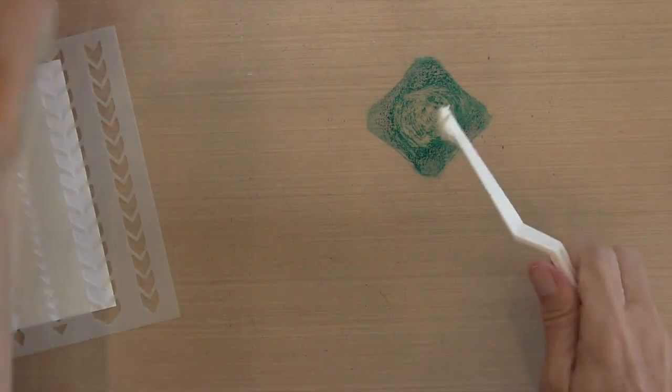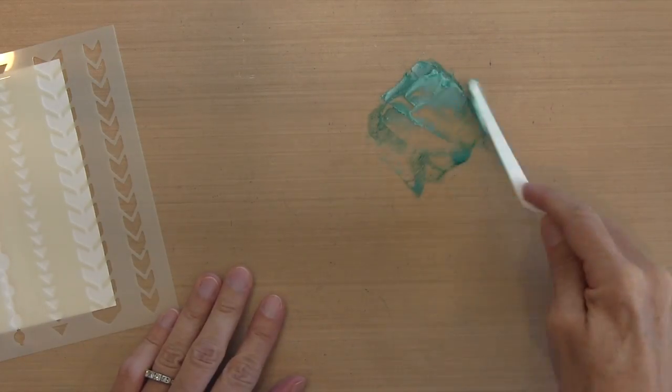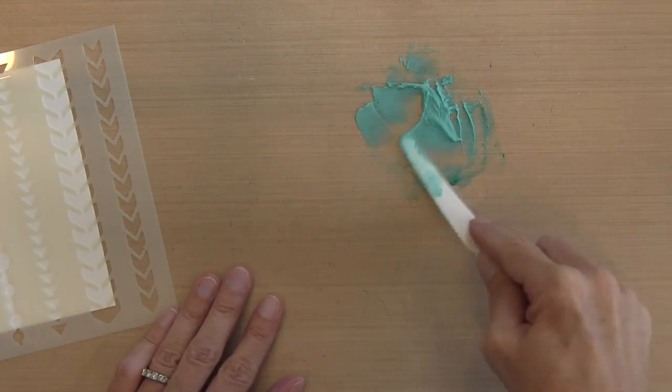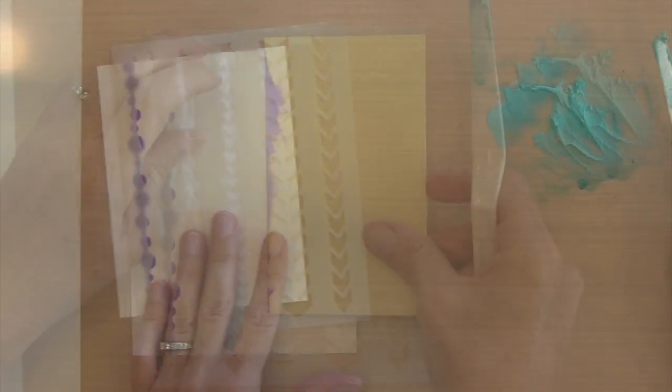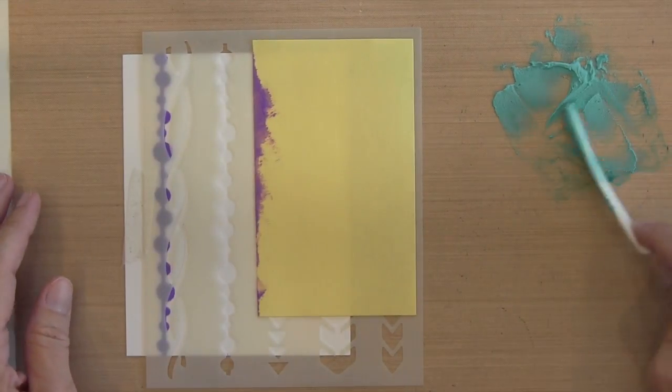Now I have my Peacock Feathers and I'm using the same amount of embossing paste and just making sure that I mix this thoroughly. It mixes really well and the color comes out really dark, which I was surprised but really happy about.